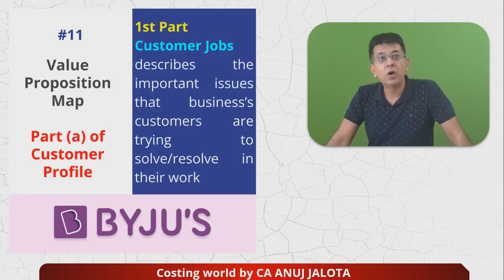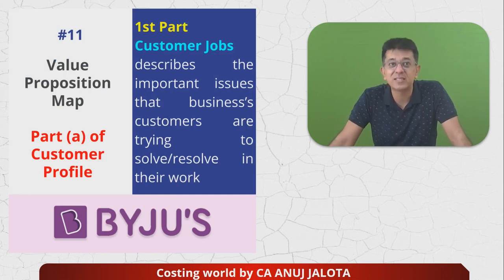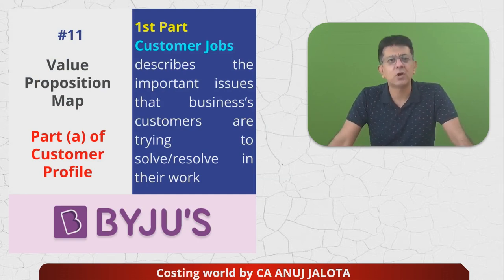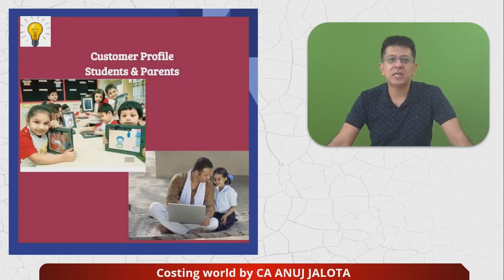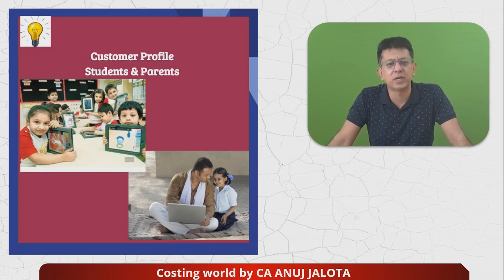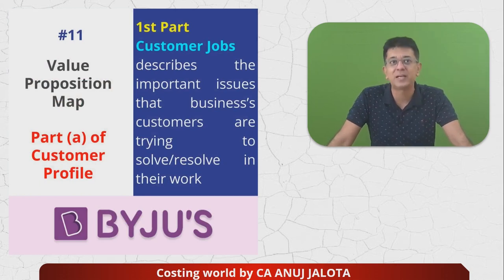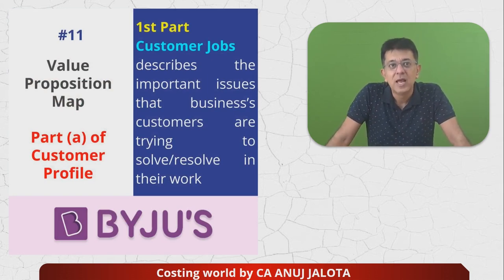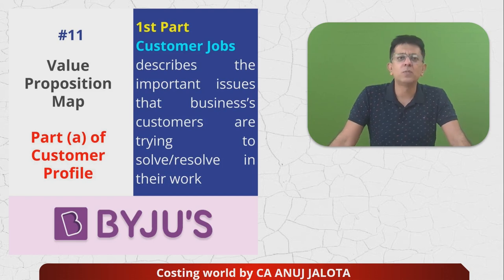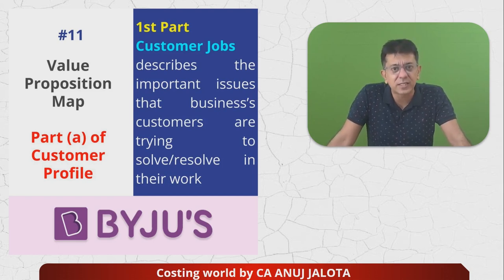Customer profile describes the important issues that business customers are trying to resolve. Let's take the example of Byju's. For Byju's, the customers are obviously the students and, more importantly, the parents, because ultimately they will be the decision makers. There are three parts of customer profile. Part A is customer jobs — it describes the important issues that business customers are trying to resolve. So who are the customers? The parents and the students. What jobs are they trying to do? They are trying to make their kids study.